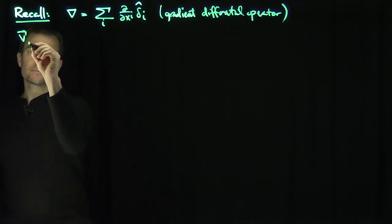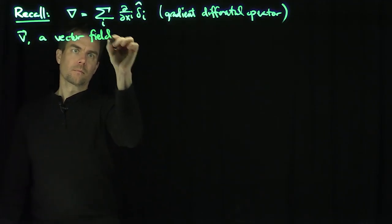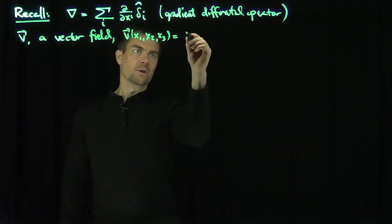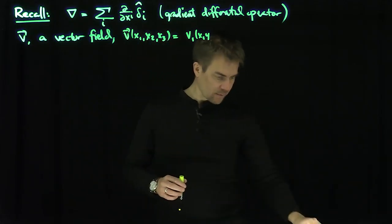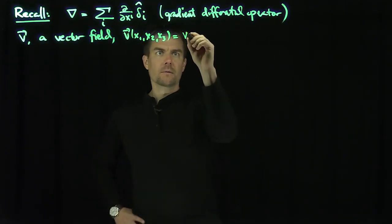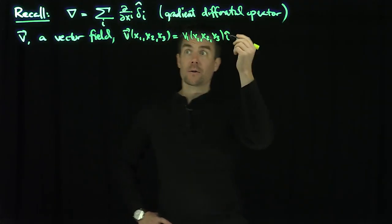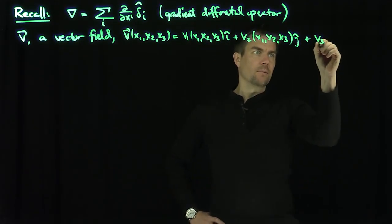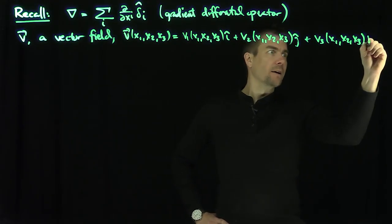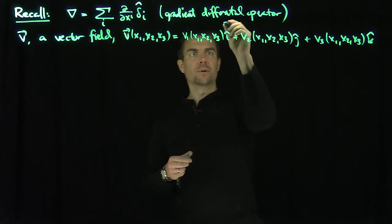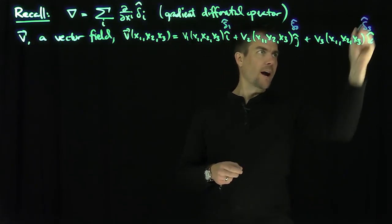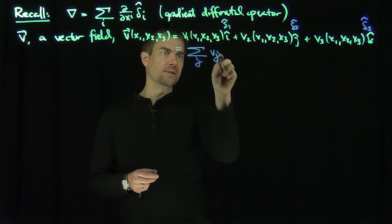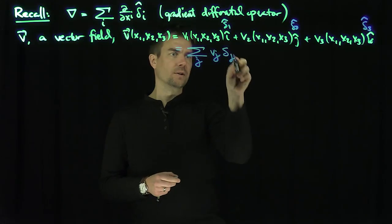If V is a vector field, that means V of x1, x2, x3 equals V1 of x1, x2, x3 times delta 1 hat, plus V2 of x1, x2, x3 times delta 2 hat, plus V3 of x1, x2, x3 times delta 3 hat. Compactly, we can write this vector field as the sum over j of Vj in the direction of delta j hat, suppressing the x1, x2, x3.